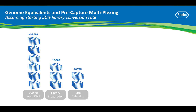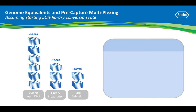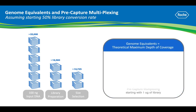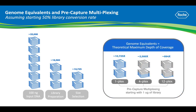If you take this library through the entire target enrichment workflow without multiplexing, starting with one microgram into your hybridization, your theoretical maximum coverage would be about 10,725x. If you multiplex your pooled samples before capture, the more you multiplex, the fewer genome equivalents you will have per library and therefore the lower your theoretical max coverage. For example, a 12-plex pre-capture equals a theoretical maximum coverage of 894x per sample.